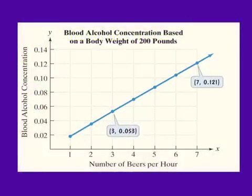The scatter plot shows the relationship between the number of one-ounce beers consumed per hour by a 200-pound person and that person's corresponding blood alcohol concentration. Also shown is a line that passes through or near the data points.